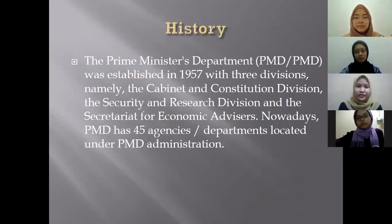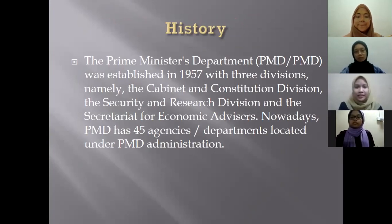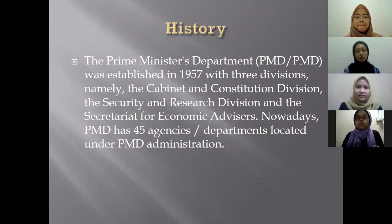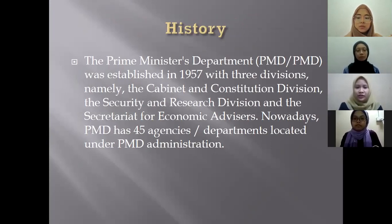Next, we are going to present about the history of the Prime Minister's Department. The Prime Minister's Department was established in 1957 with three divisions: the Cabinet and Constitution Division, the Security and Research Division, and the Secretariat for Economic Advisors. Nowadays, PMD has 45 agencies or departments located under PMD administration.